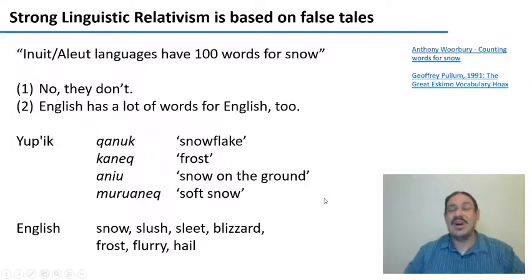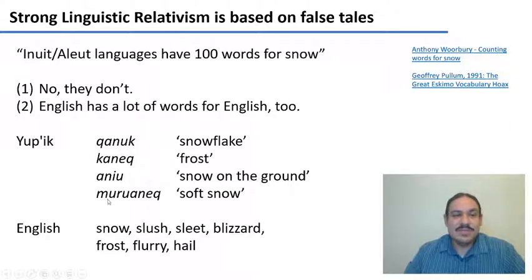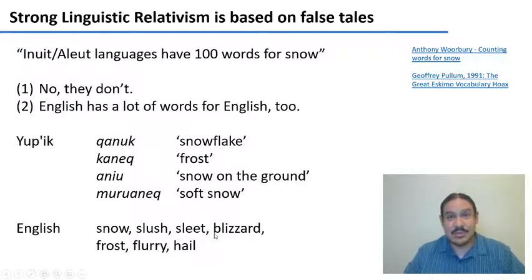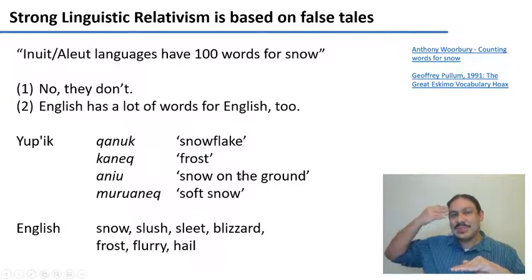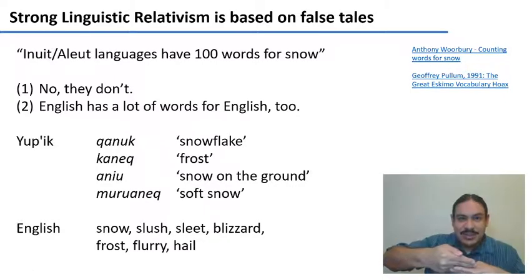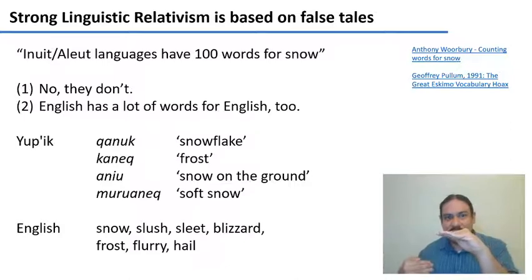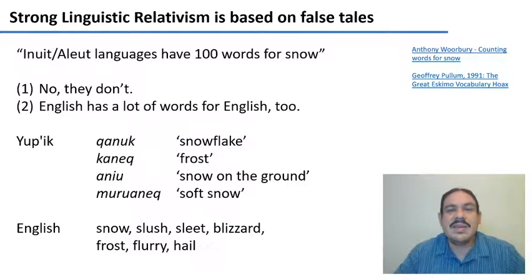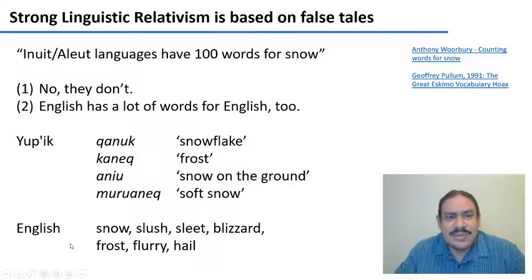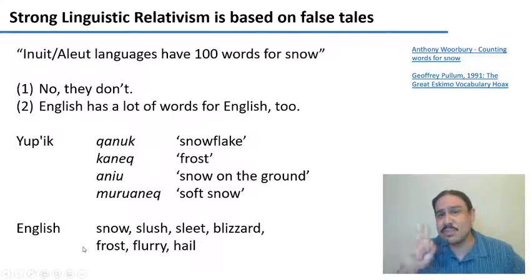So it's not about their language making them see more things about snow. It's about both of these languages being used in environments with different types of snow, and you want to describe them because your culture is in contact with snow. The influence started from your culture into your language, not from your language into your culture. And again, it's not true that they have a hundred words for snow, nor that English has just one.